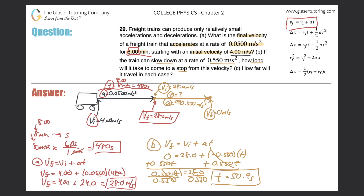Letter C is now asking us how far will it travel in each case? There are really two parts: the frame in black and the frame in gold. It sounds like it wants me to calculate the displacements in each case. Let me first do the first case in black. I need to find the displacement.